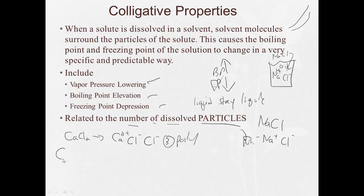Sugar is covalently bonded, C6H12O6. If I put that into water, it's going to dissolve into C6H12O6 aqueous one particle. So the more particles, the more the colligative properties affect the boiling point, freezing point, vapor pressure lowering of the liquid. So of these three, CaCl2 will have the greatest effect, sugar will have the lowest effect, and the salt will be somewhere in the middle.